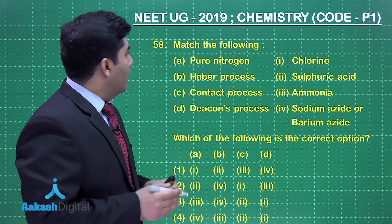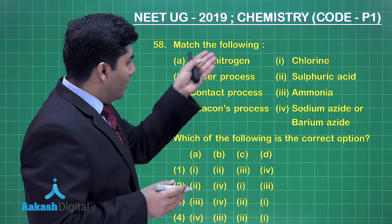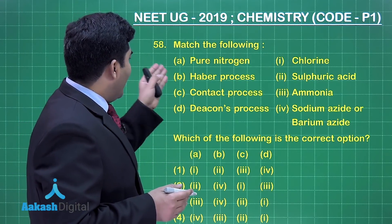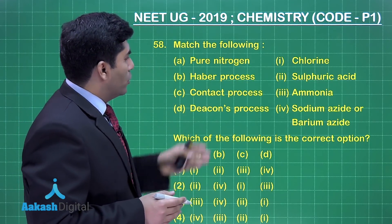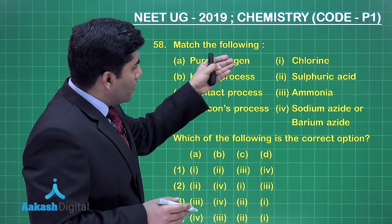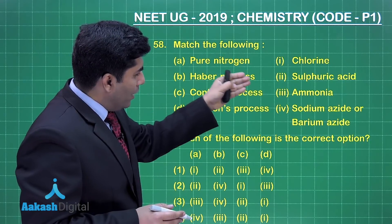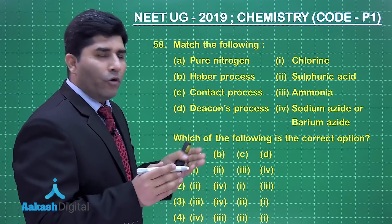Now let's move on to the next question. In this question, two columns are given and we have to match those columns. Column A is pure nitrogen, and there are four options: chlorine, sulfuric acid, ammonia, and sodium azide.